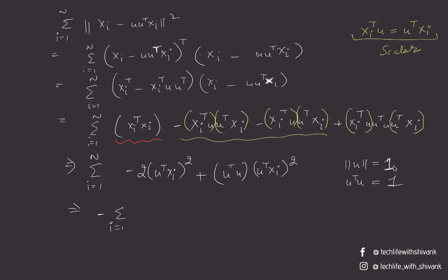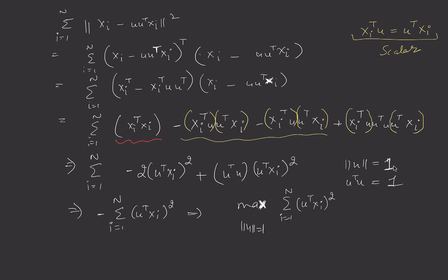We need to minimize: minus Σ(i=1 to n) (u^T*xi)², which implies we have to maximize Σ(i=1 to n) (u^T*xi)² such that the magnitude of u is 1. If we note carefully, this is nothing but the variance of the xi's when projected onto vector u, provided we assume the data is mean-centered so that the average of xi equals zero. This reduces to exactly the same case as maximizing the variance.